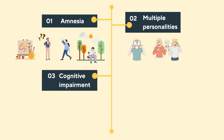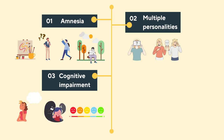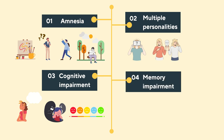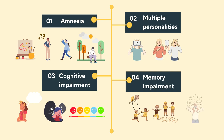Next is cognitive impairment. People suffering from DID usually have extrasensory experiences like living in a dream, hearing voices, and periods of extreme emotions. The last symptom is memory impairment — they cannot remember most of their childhood memories. They may also experience flashbacks of traumatic events and then find themselves unable to recall what they just remembered.